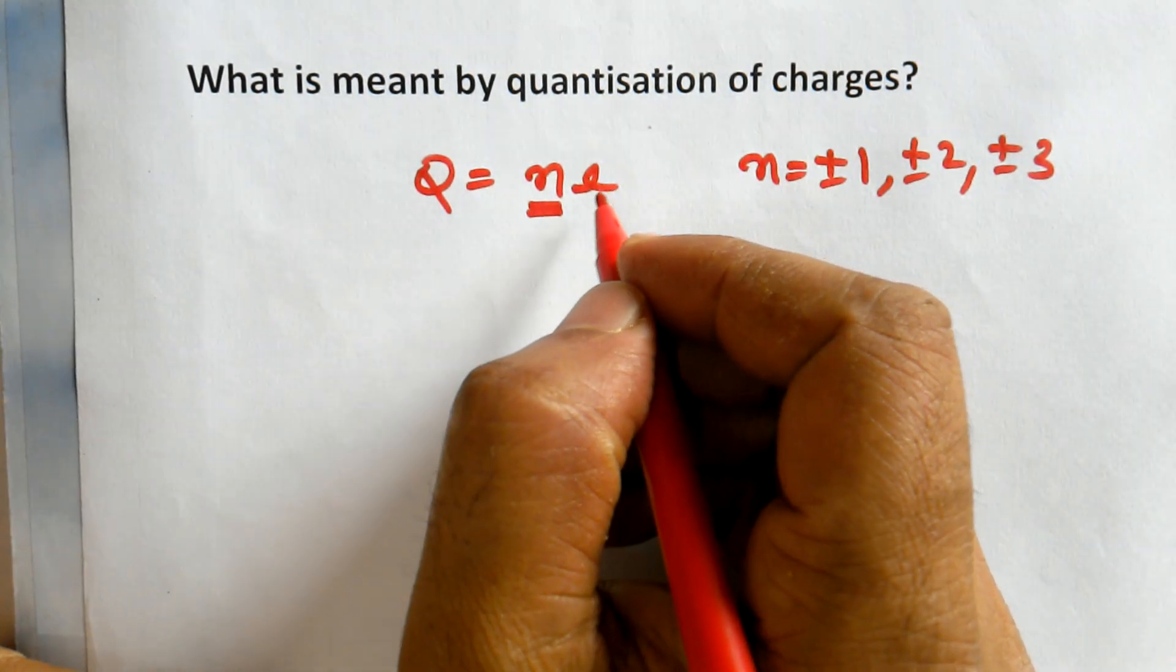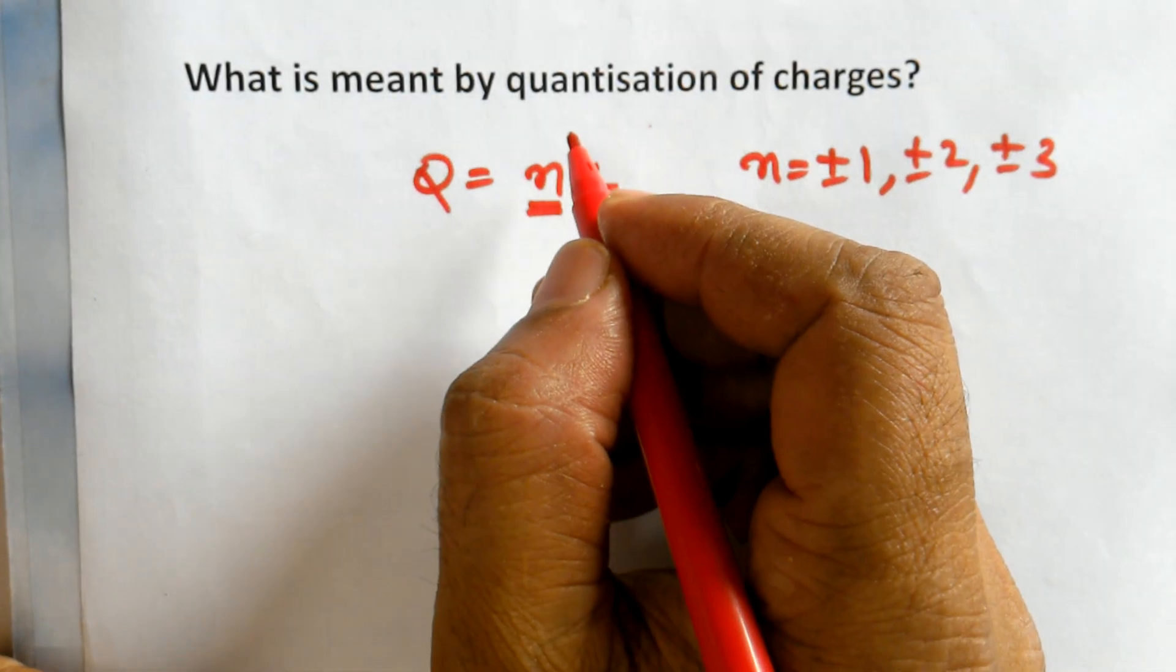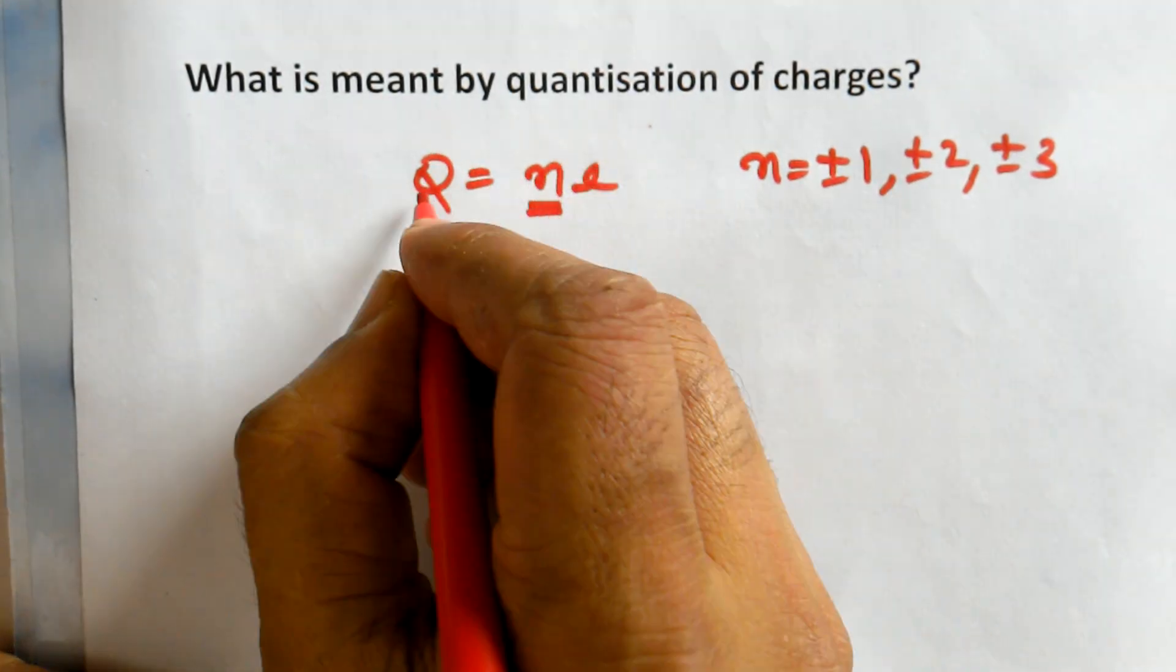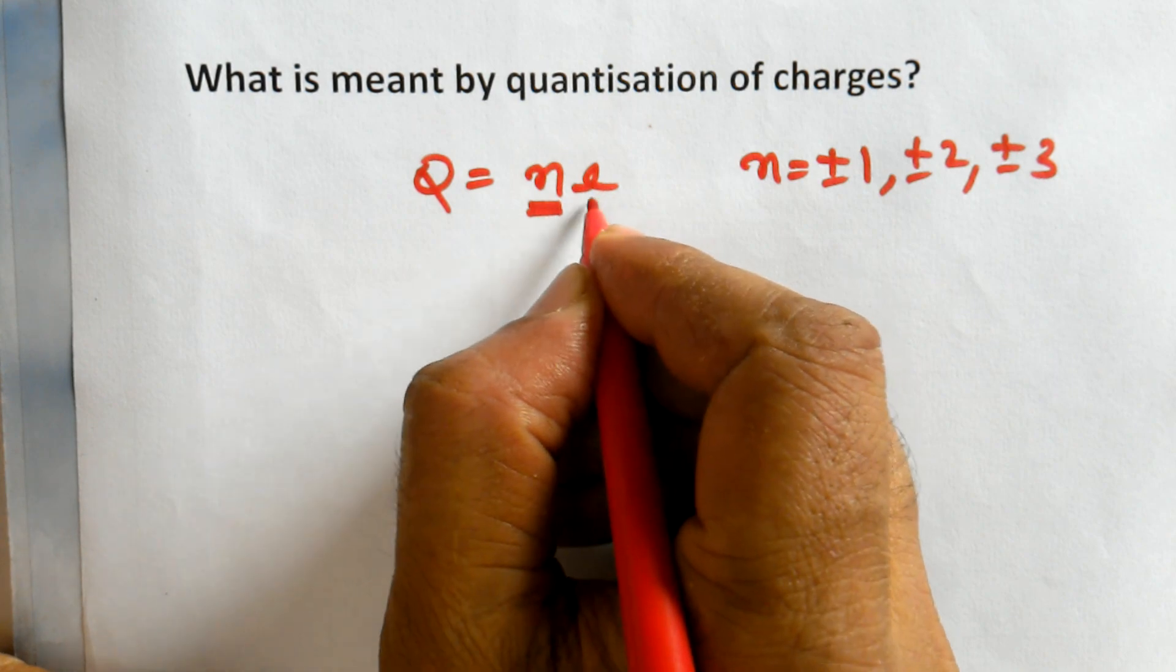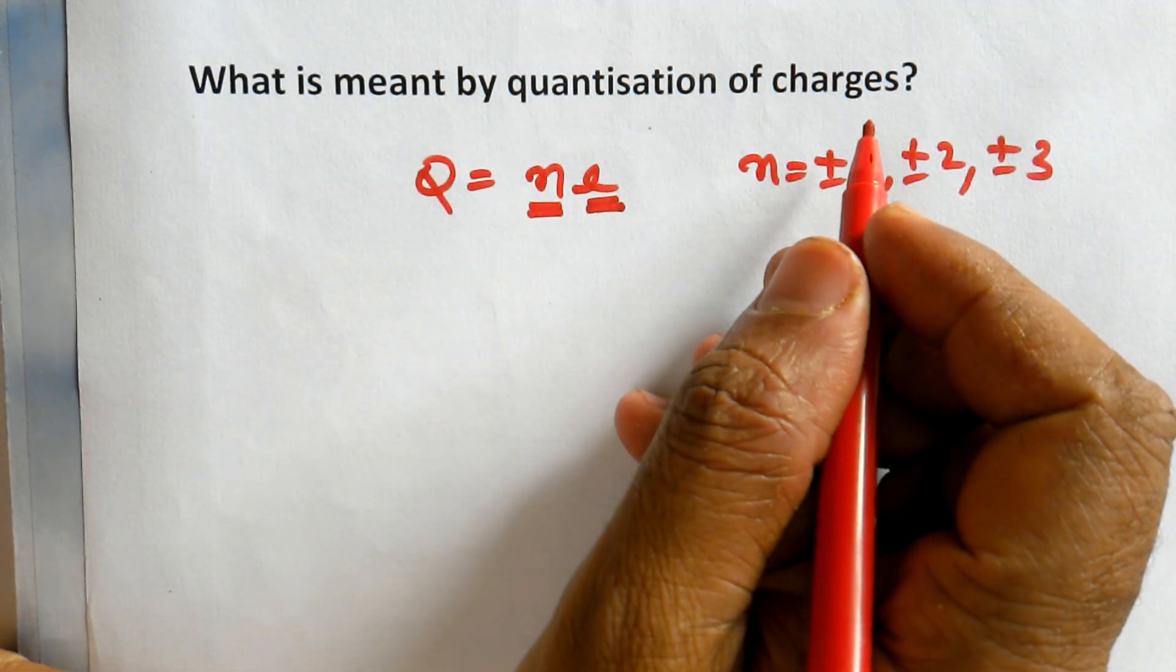Electrons are removed or added in the form of integers, so it is quantized. The charge on your body is always an integral multiple of the magnitude of the electron's charge. That is what we call quantization of charges.